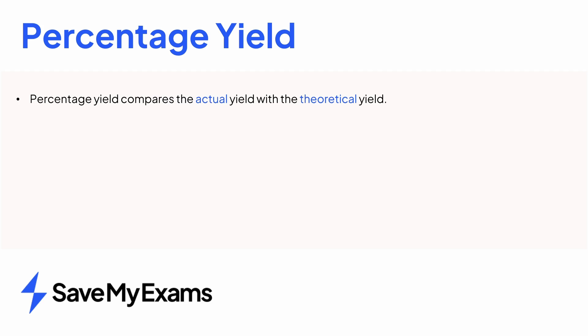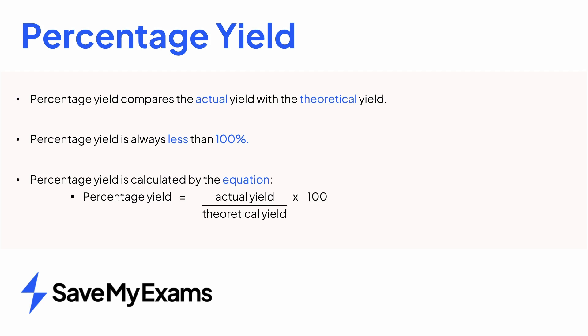In summary, the percentage yield compares the actual yield with the theoretical yield. Its value will always be less than 100%, as the actual yield will always be less than the theoretical yield. We can use this equation to calculate the percentage yield, which you need to learn.